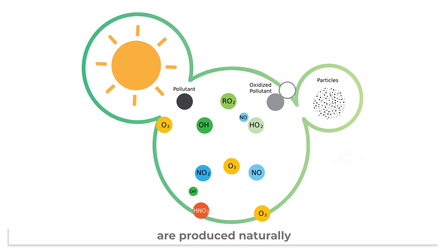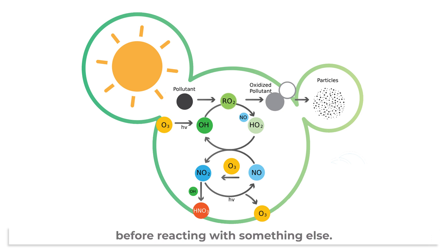Radicals such as hydroxyl are produced naturally when sunlight mixes with ozone, but they only last for a very short time before reacting with something else. In spite of such a short lifetime,